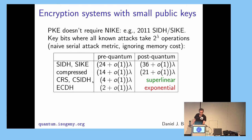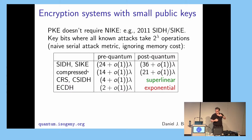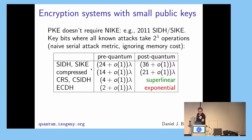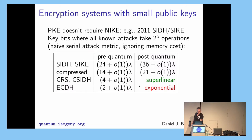CSIDH has twice as big keys as traditional elliptic curve Diffie-Hellman. For the same security level, instead of a 256-bit 32-byte key, you need a 64-byte key. SIKE is quite a bit bigger. There are two variations: compressed SIKE, which is only about 3.5 times bigger than CSIDH — or seven times bigger than elliptic curve Diffie-Hellman — and an uncompressed version, which I don't think will last long-term because the compressed version is getting faster and faster. Post-quantum, if you count the attack costs naively, SIKE and compressed SIKE get somewhat bigger. Elliptic curve Diffie-Hellman is completely broken.